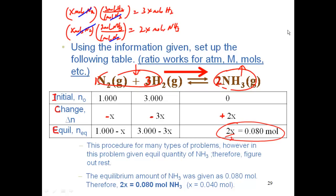So if I divide both sides by 2, I can figure out that x is equal to 0.040 moles. So now I can plug that value into my x's and my other two expressions and I can solve for my equilibrium amounts.